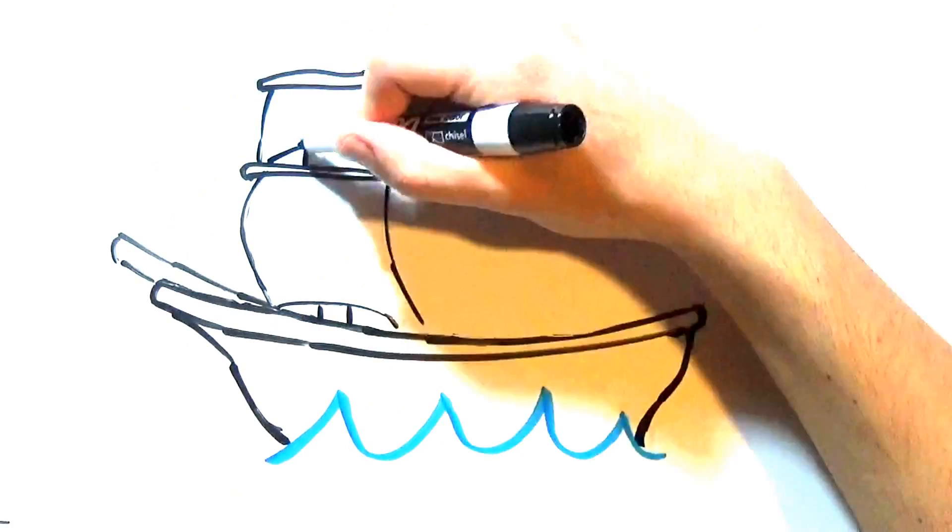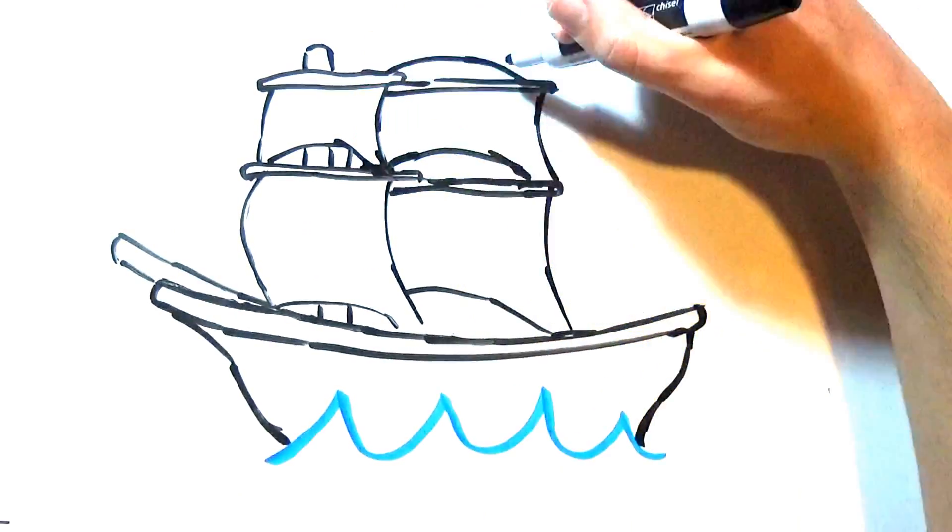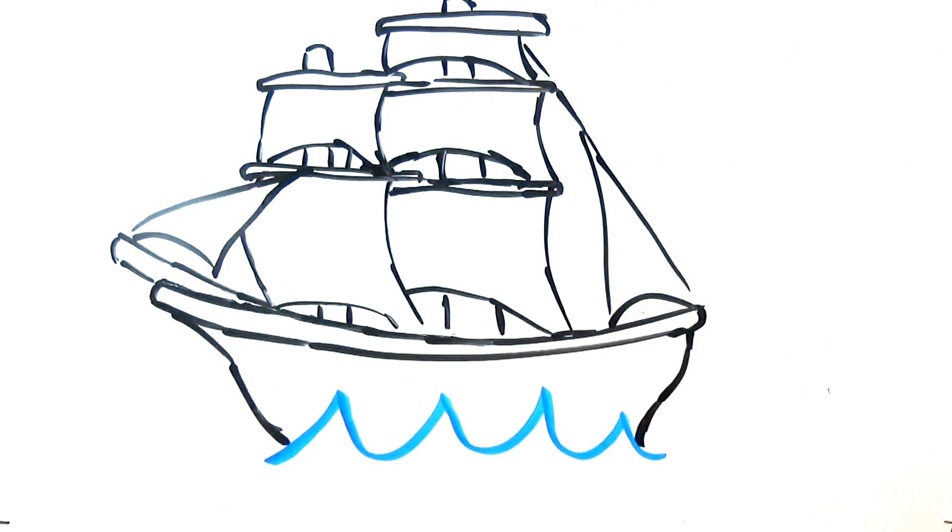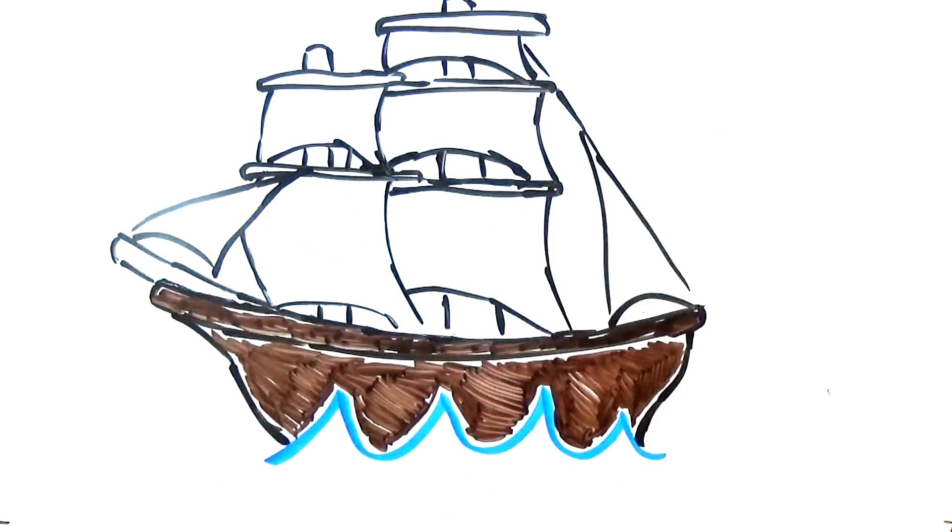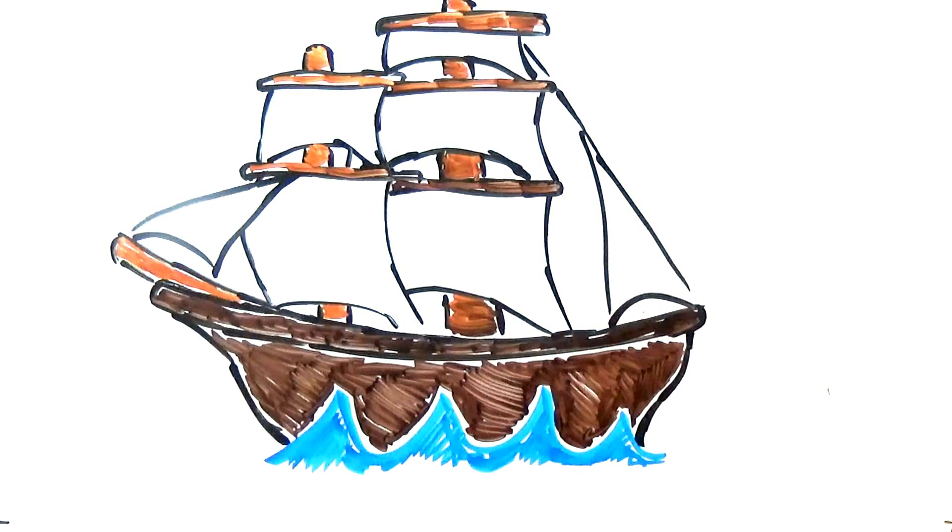In 1492 Christopher Columbus sailed the ocean blue on the Nina, Pinta and Santa Maria, which had both square sails carrying the ships in the direction of the wind and jibs carrying the ships against the wind's direction.